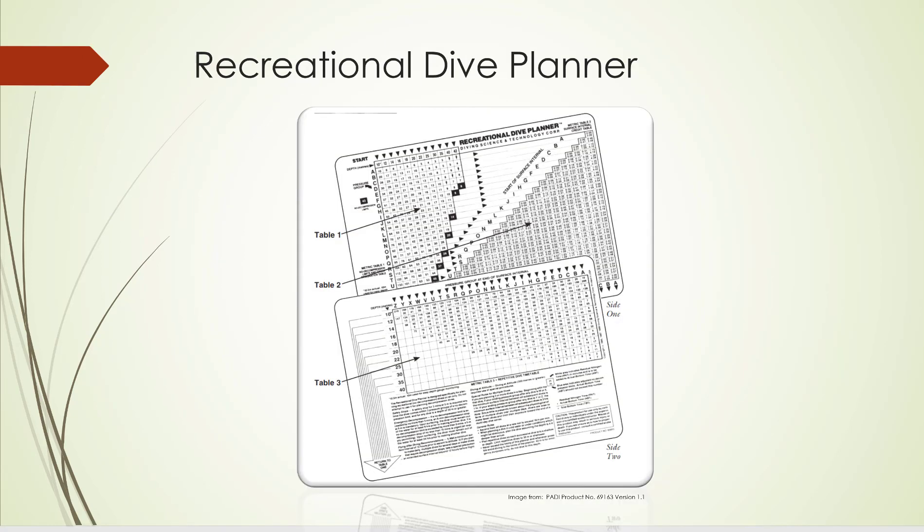As you can see here, the Recreational Dive Planner Table is actually three tables linked together. Each of the three tables provides information for planning dives within accepted nitrogen levels. When using the RDP, there are some general rules and terminology that you need to be aware of.